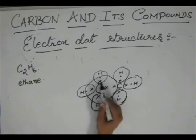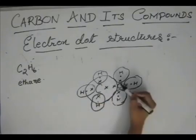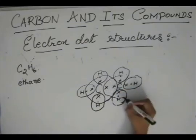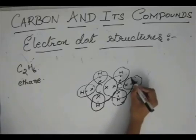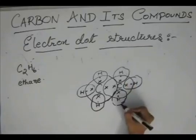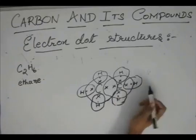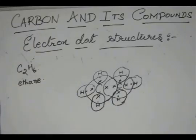So it has 1, 2, 3, 4, 5, 6, 7, 8. And similarly this carbon also shares with this carbon and with these 3 hydrogens. So this carbon also has 8 electrons.